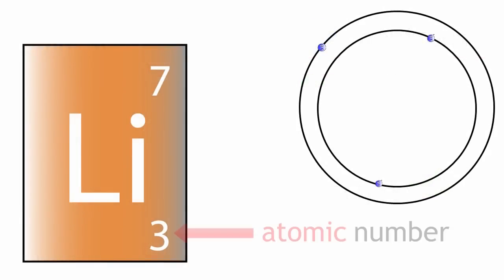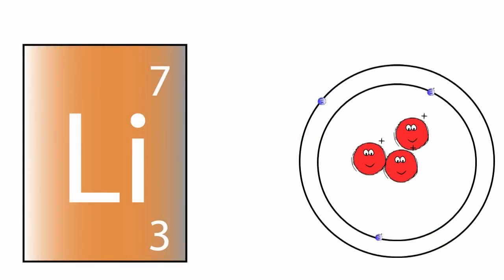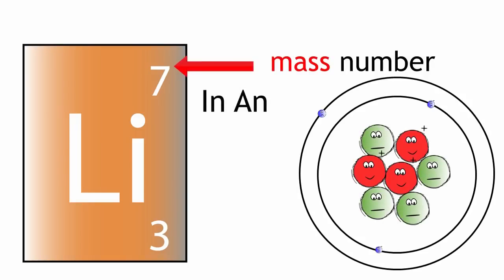So the atomic number is the number of protons in an atom, and the mass number is the number of protons and neutrons in an atom.